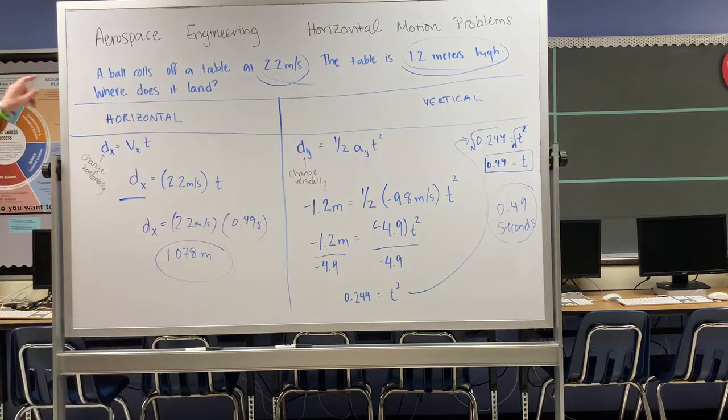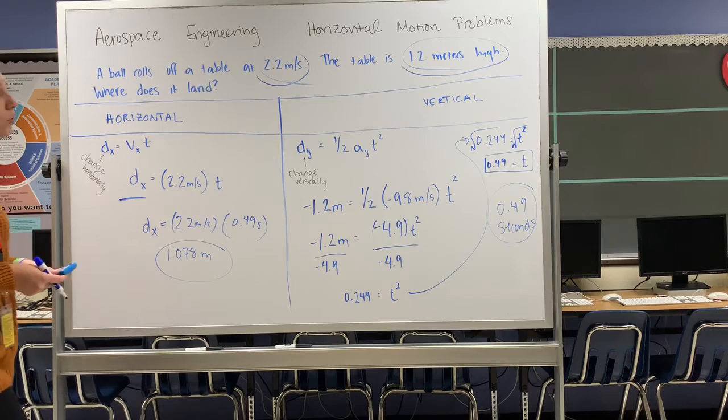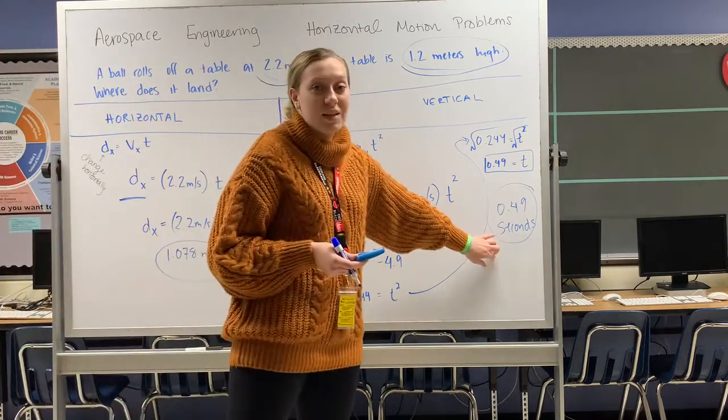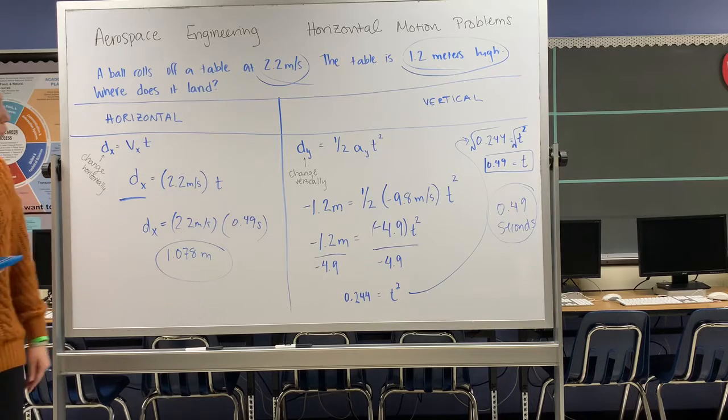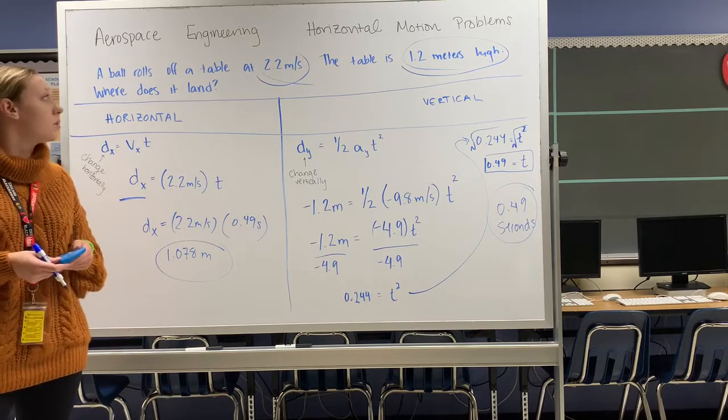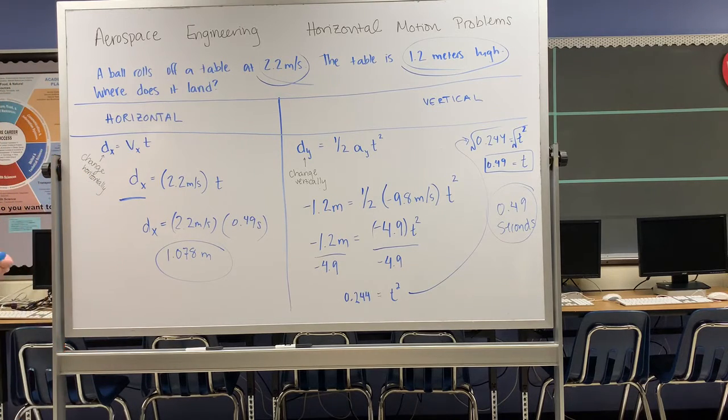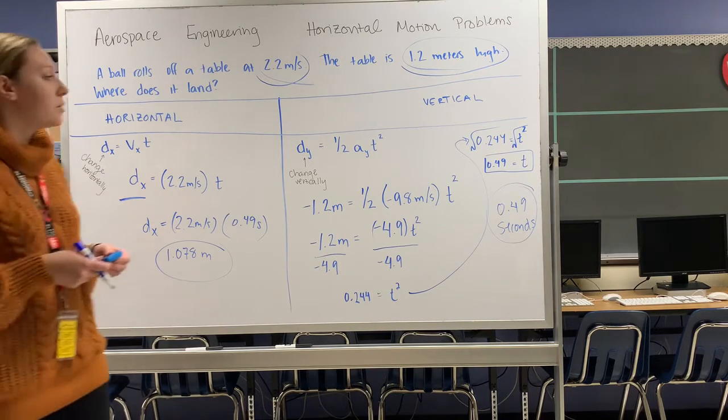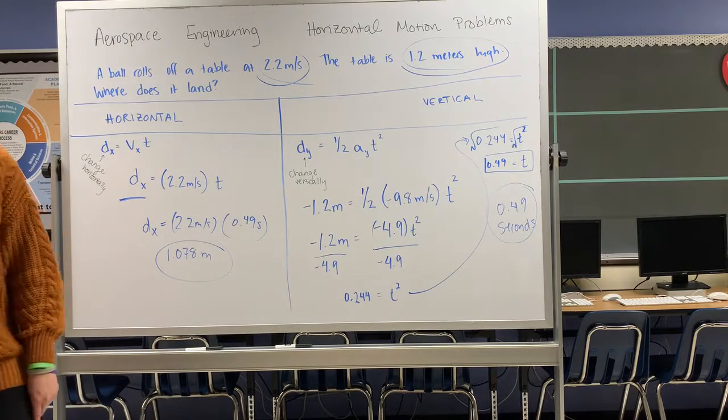Ms. Vogel, what does that mean? If a ball rolls off the table at 2.2 meters per second and the table is 1.2 meters high, not only is it going to hit the ground in less than a second, I know it's going to land exactly 1.078 meters from the end of that table. So answers for the challenge question number one, you should have gotten 0.49 seconds and 1.078 meters.